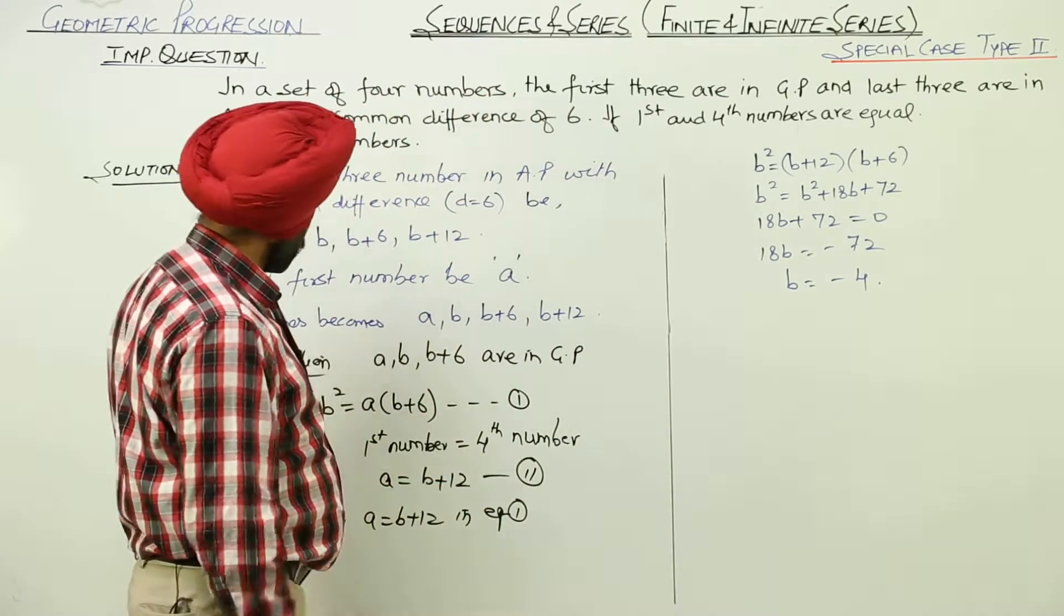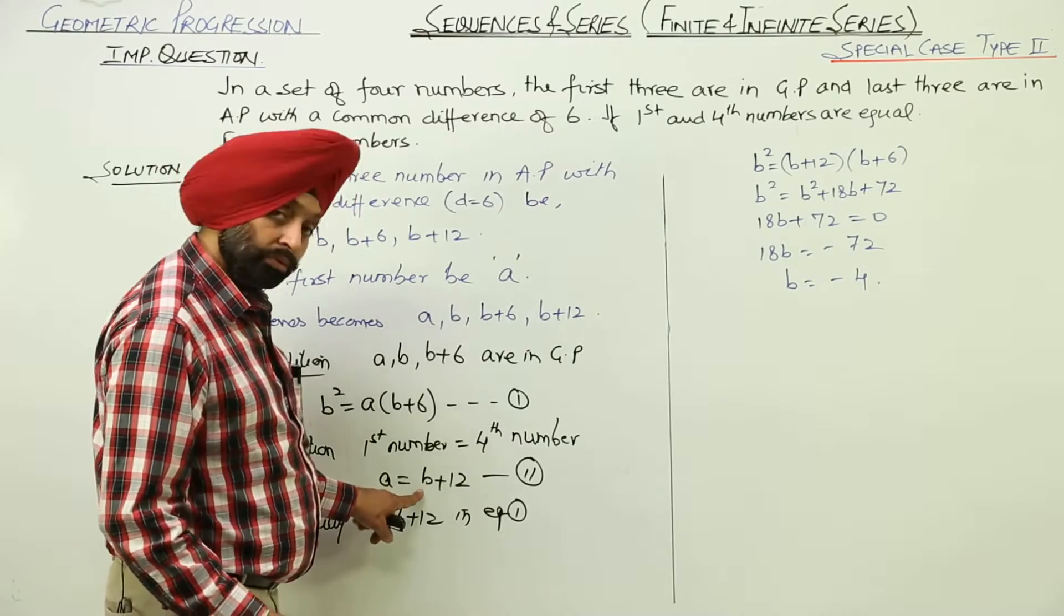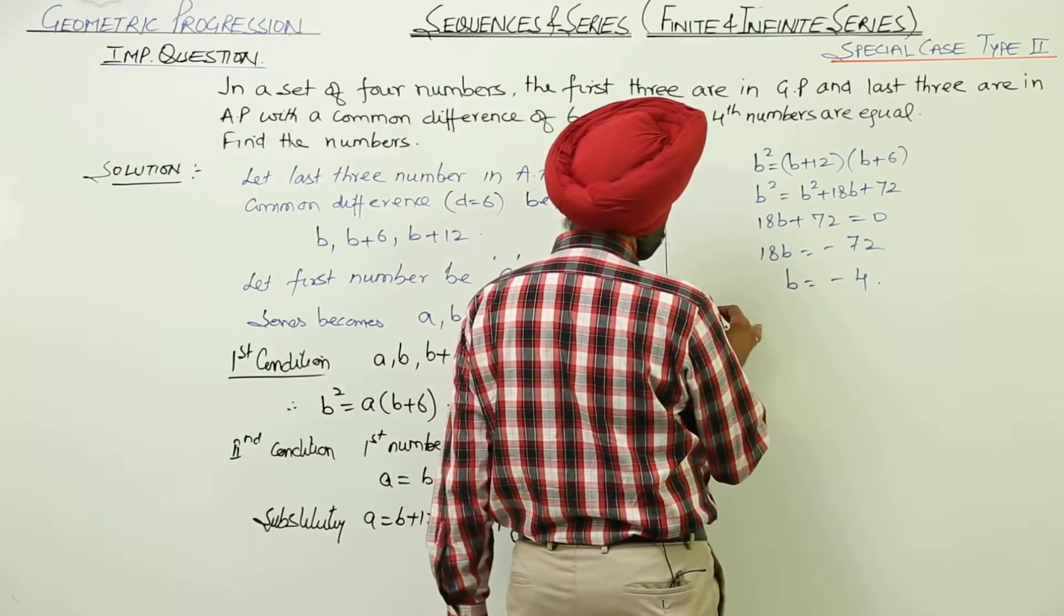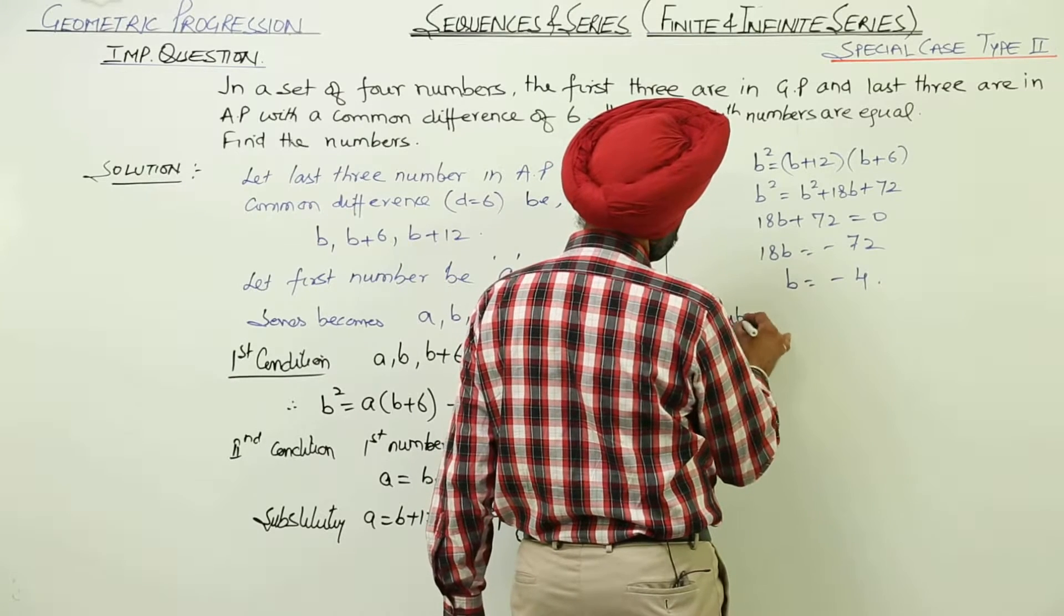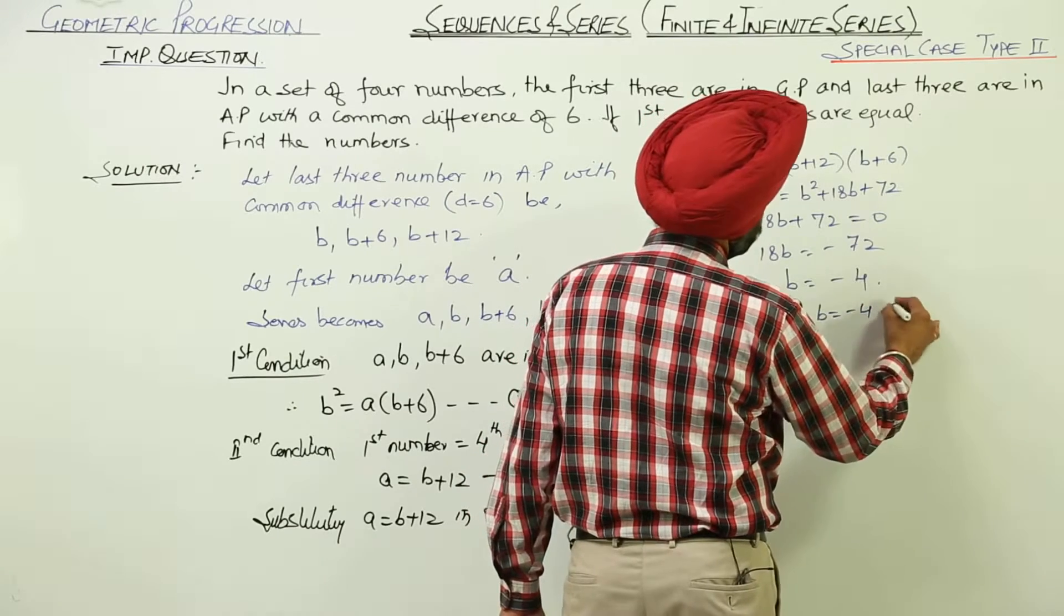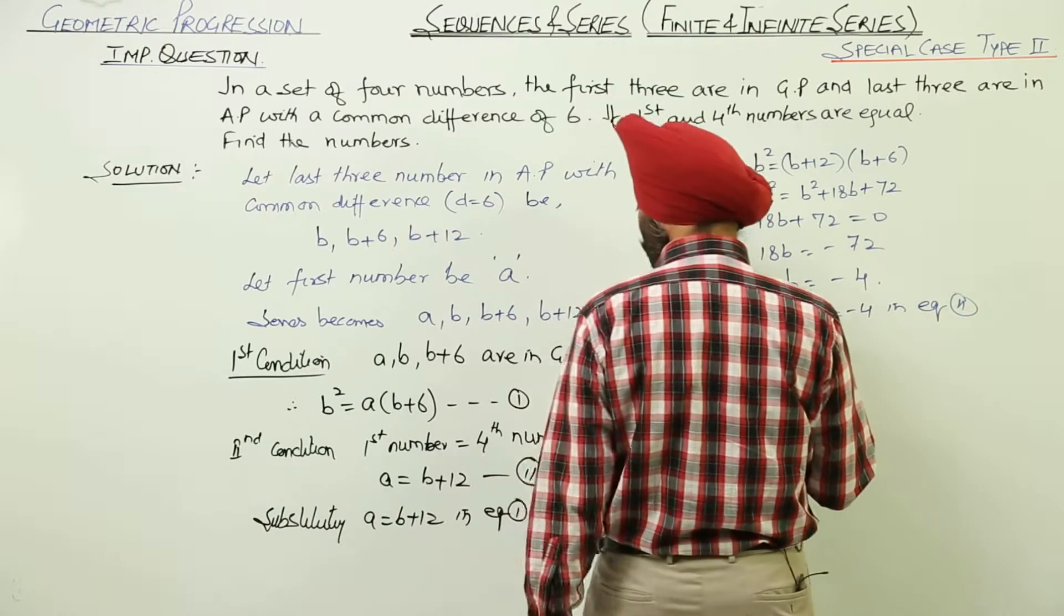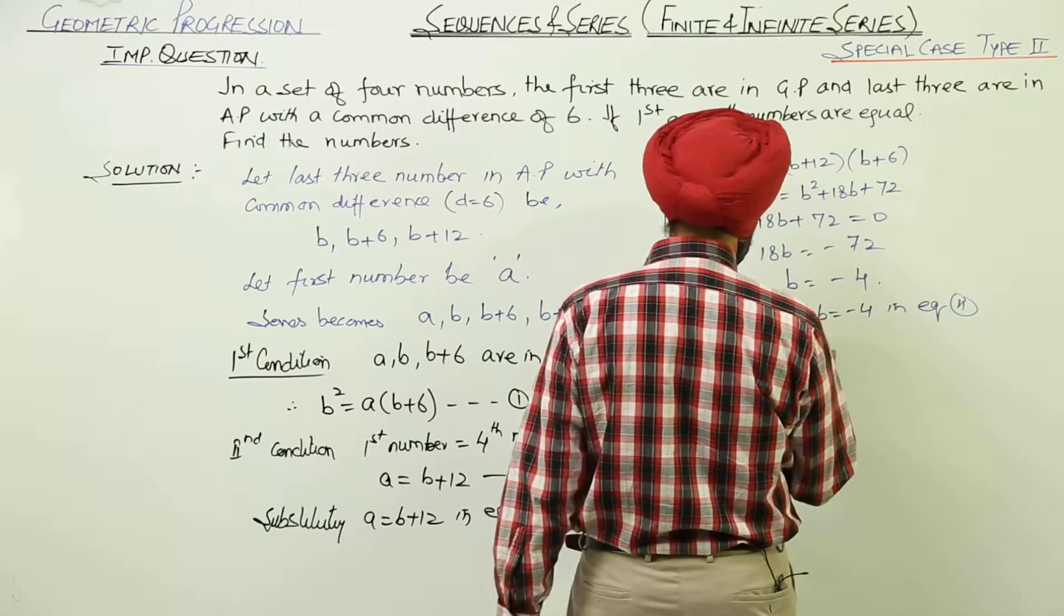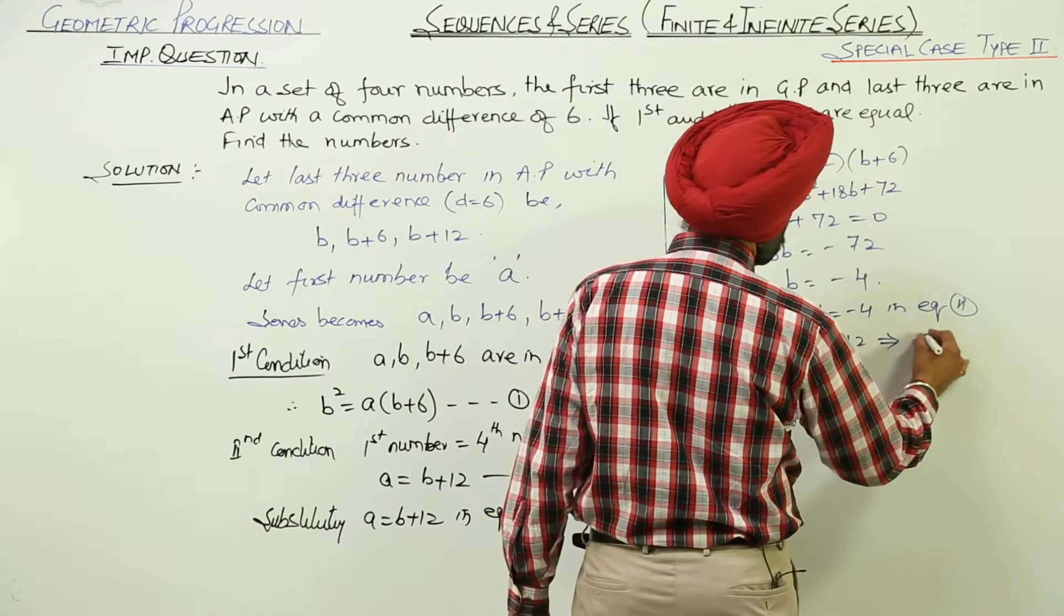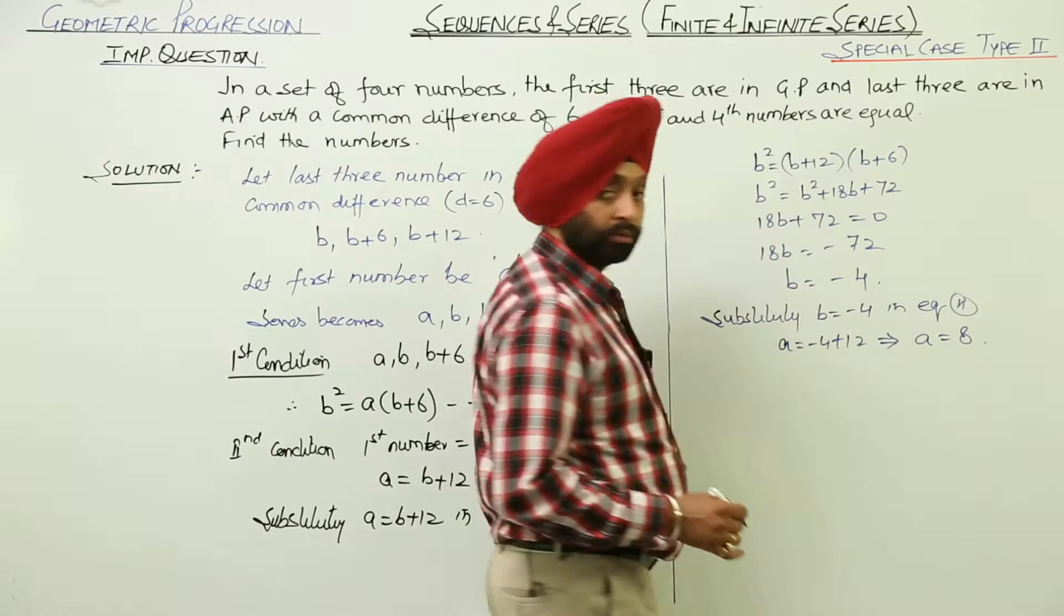First thing what we want? That is A and from equation 2. A is equal to B plus 12. Substituting B is equal to minus 4 in equation 2. We are getting A is equal to minus 4 plus 12. So, A is equal to here we are getting 8. First thing.